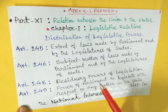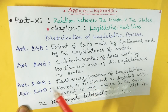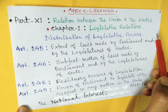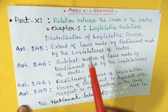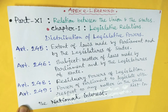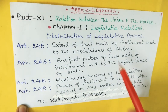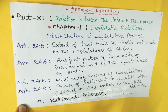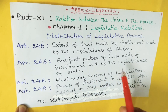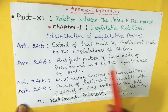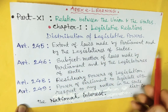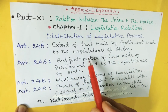In our constitution, Part 11 deals with the relation between the union and the states. In Chapter 1, there are legislative relations between center and states. Under legislative powers, there are two heads: one is jurisdiction and another is subject matter. In jurisdiction, Article 245 says: extent of laws made by Parliament and by the legislature of states.